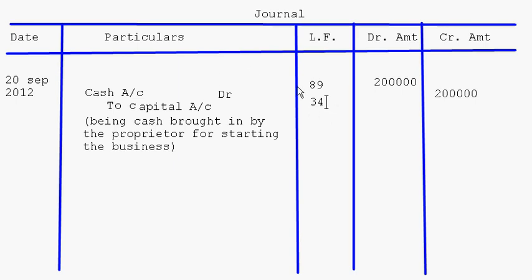The ledger folio column can be filled in the journal only when the amount is posted to the ledger. When you are making the journal entry, at that point of time we cannot write this ledger folio number. This ledger folio number can come only when we are posting it to the ledger — at that point of time we post it and simultaneously write the page number in this column.